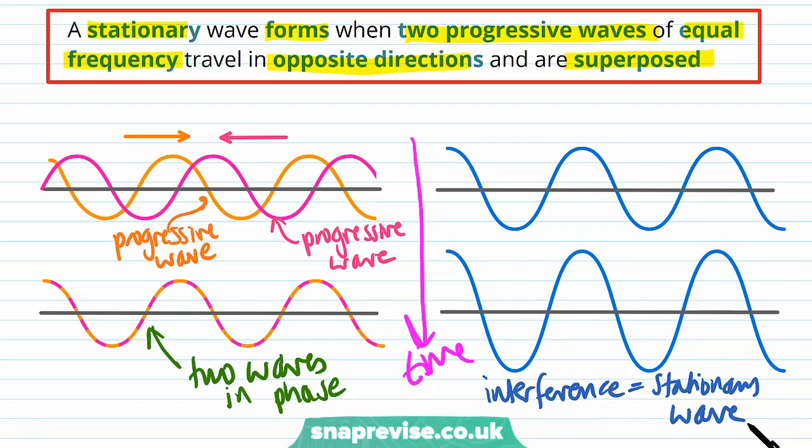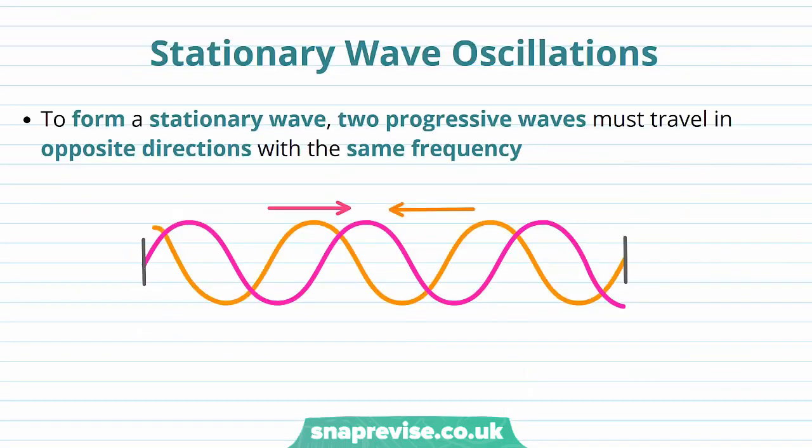When the two waves align in phase we get maximum displacement — maximum constructive interference. It is the interference between these two waves that creates our stationary wave. Unlike progressive waves, a stationary wave oscillates in a fixed position; in a stationary wave the oscillations are stationary.